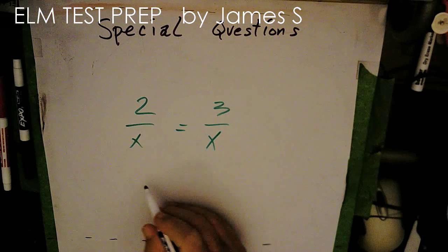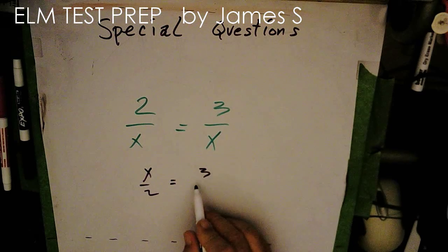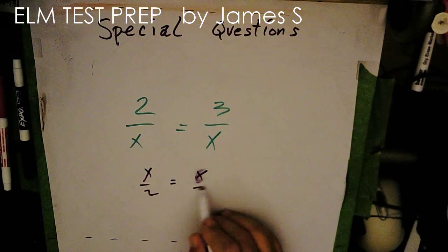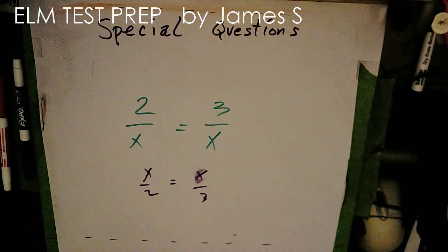2 over x equals 3 over x. Well, I could just flip this and call this x over 2 and 3, or x over 3 on this side.